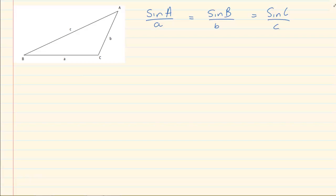Now what do we know from our area rule? We know that half AB sin C is equal to the area of a triangle, but also that half BC sin A is equal to the area of a triangle. And likewise, half AC sin B is equal to the area of a triangle.